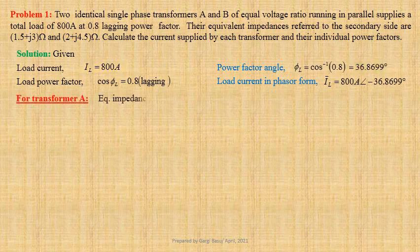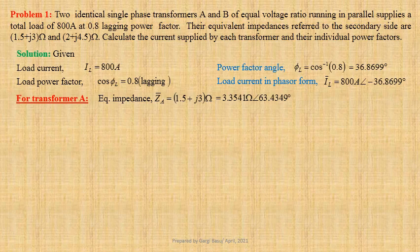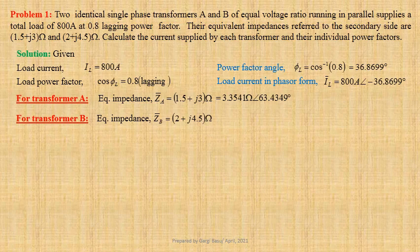For transformer A, given equivalent impedance ZA equals 1.5 plus J3 ohm. This may be written in polar form as 3.3541 ohm at an angle 63.4349 degree. For transformer B, given equivalent impedance ZB equals 2 plus J4.5 ohm. This may be written in polar form as 4.9244 ohm at an angle 66.0375 degree.